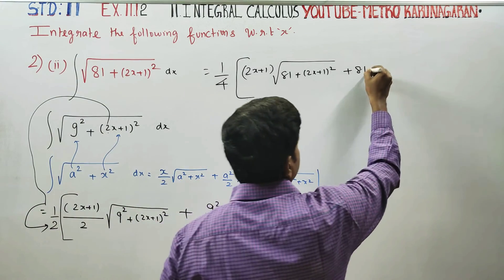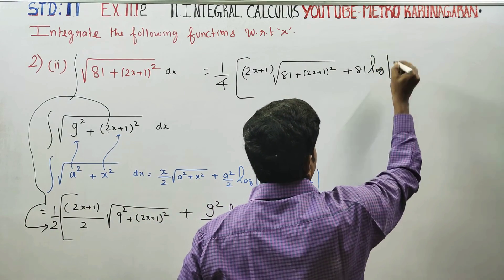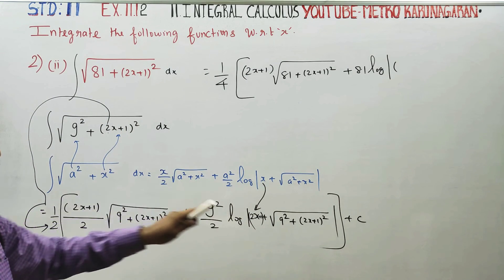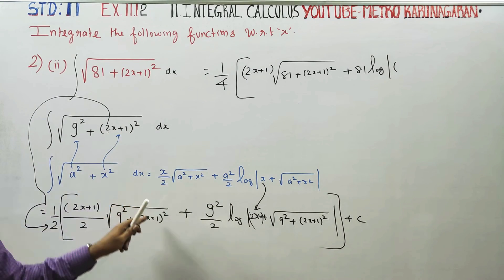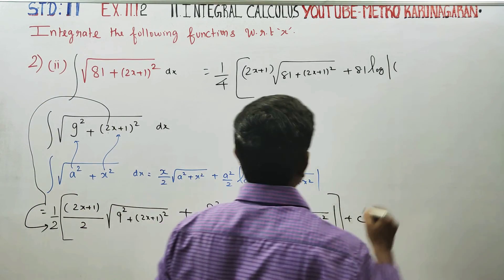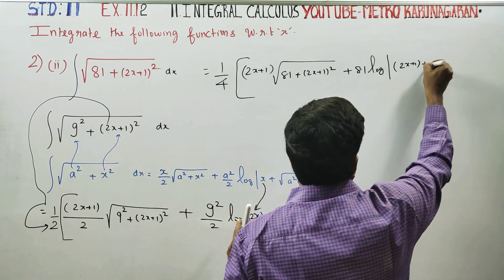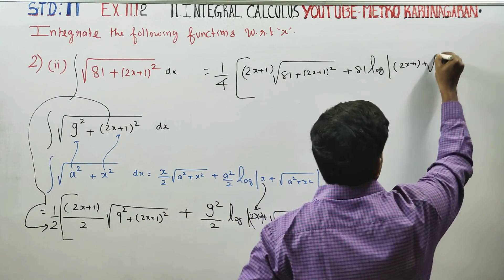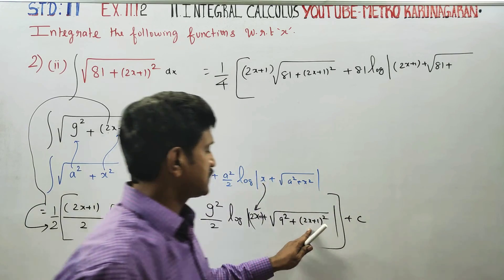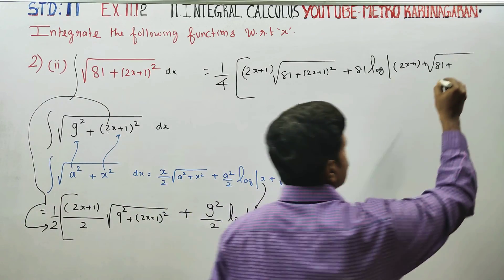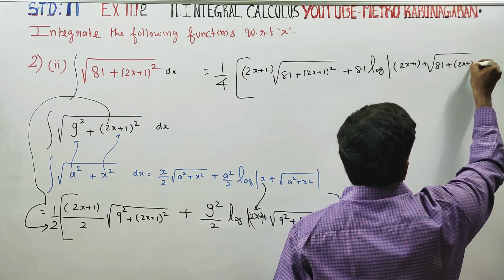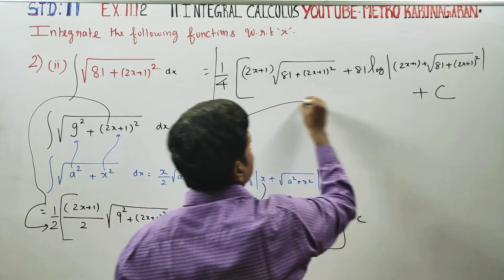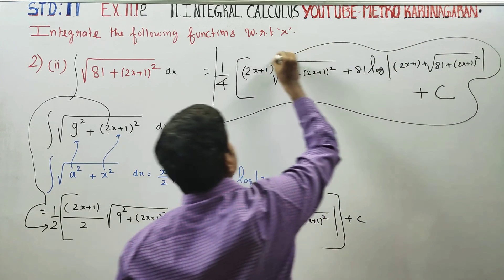Then 2 times logarithm of modulus of (2x+1) plus square root of 9 square, which is 81, plus (2x+1) square, plus c. This is the final result for this problem.